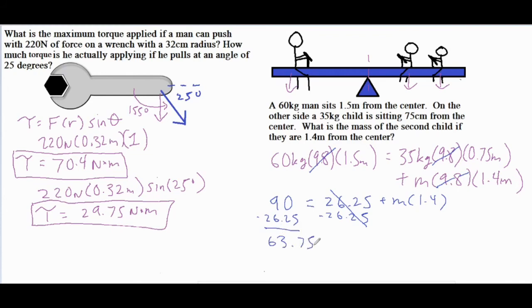I went ahead and multiplied the 60 times 1.5 to give me that 90 on the left side of the equal sign. And then on the right side, 35 times 0.75 gave me 26.25, and then we had our unknown mass times that 1.4. So I subtracted the 26.25 from both sides, divided by 1.4, and we got our final mass of 45.54 kilograms.